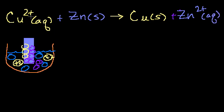Just a little side note: these are actual ions. We've been dealing with oxidation numbers, and the oxidation number of an ion is the same thing as its charge, because it's no longer hypothetical. Oxidation numbers were hypothetical charges if a bond were ionic; in this case they are ionic, so the oxidation state or oxidation number is the same as the charge.